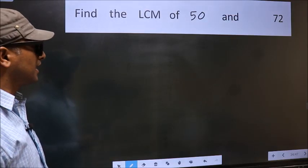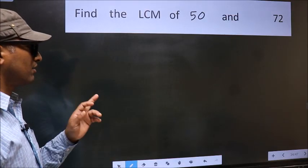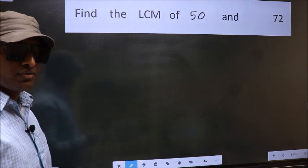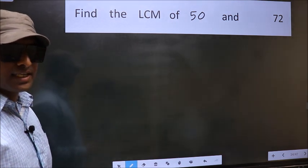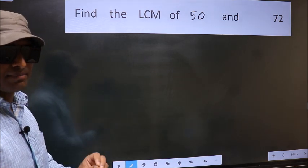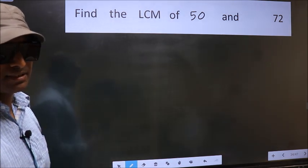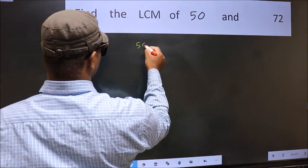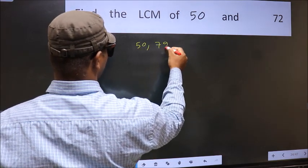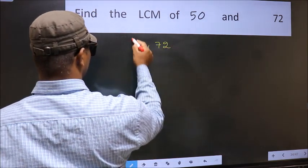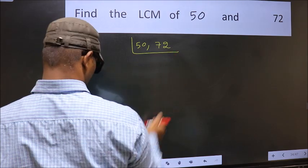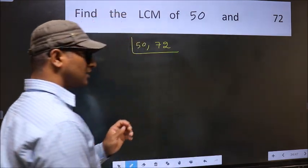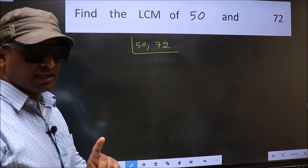Find the LCM of 50 and 72. To find the LCM, first we should frame it in this way: 50 and 72. This is your step 1.